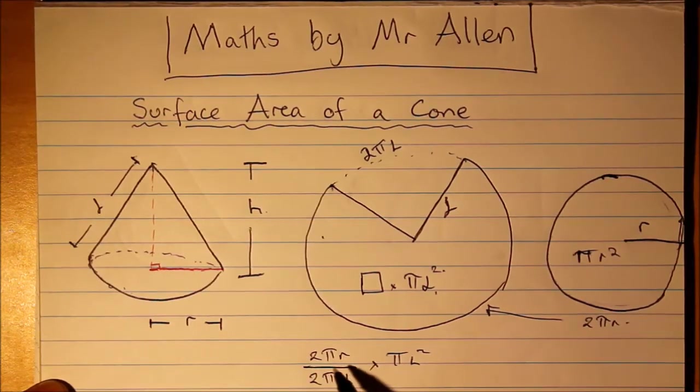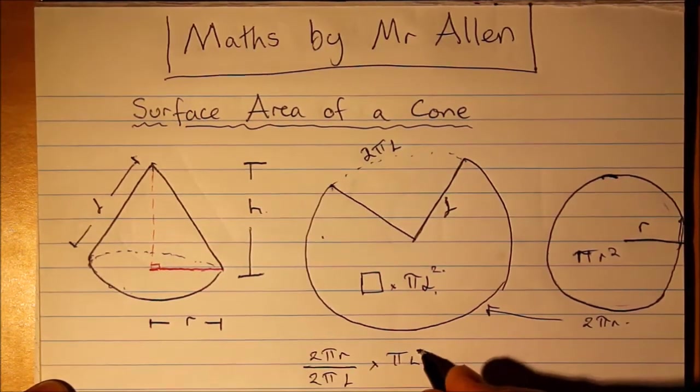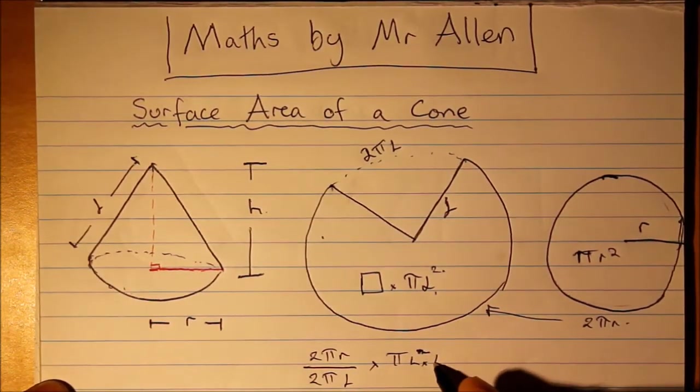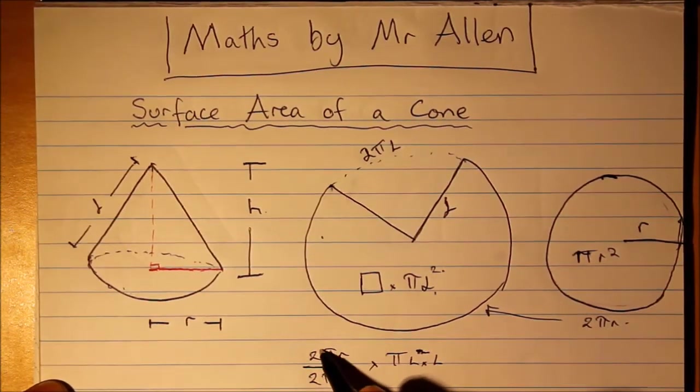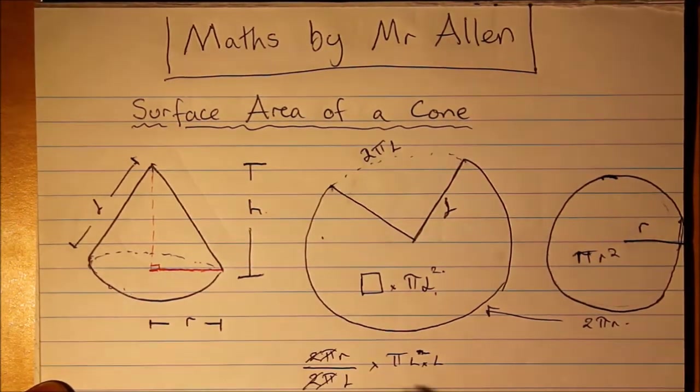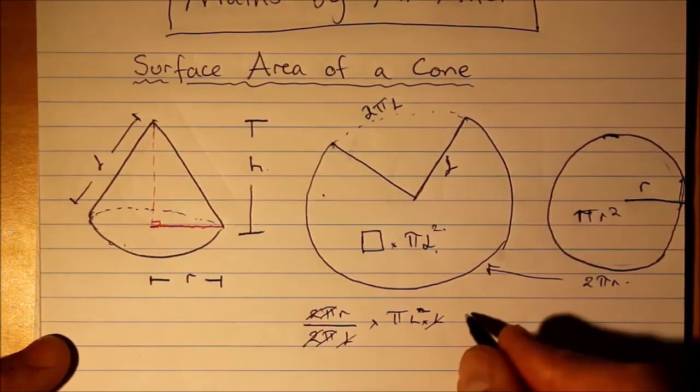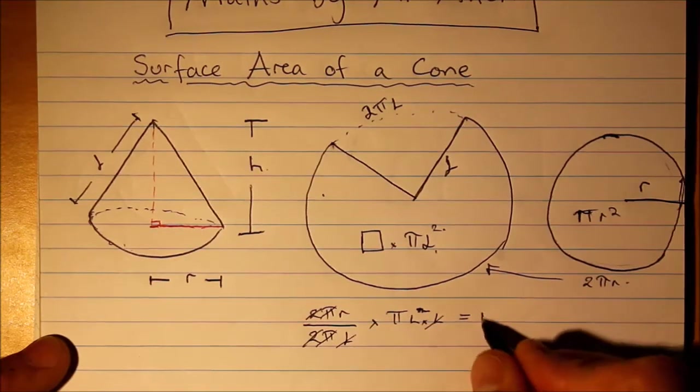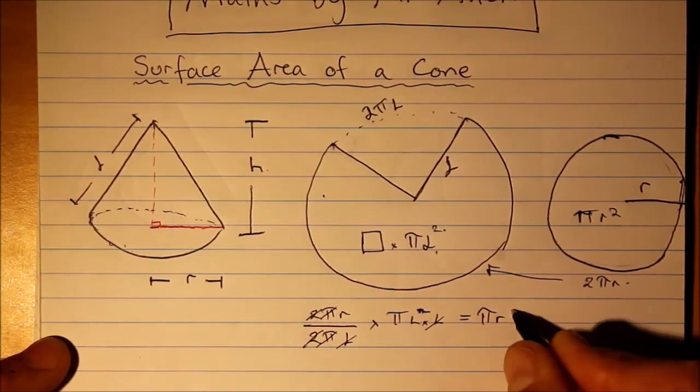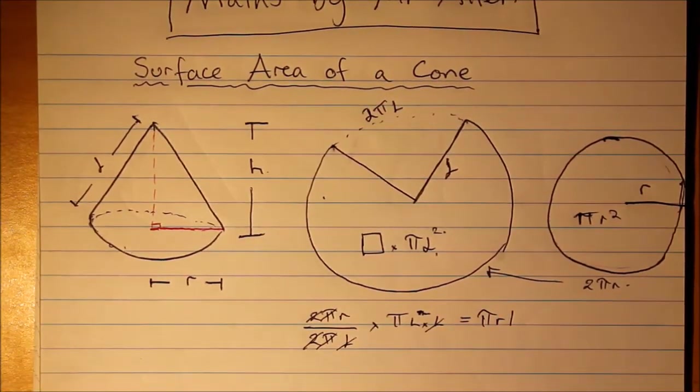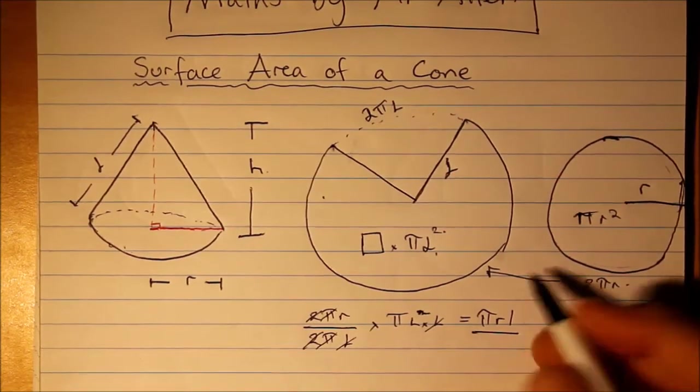Let's scrub that out and this times l. You start to cancel here and you can cancel one of the l's here with that, which leaves us πrl as the formula for this larger sector.